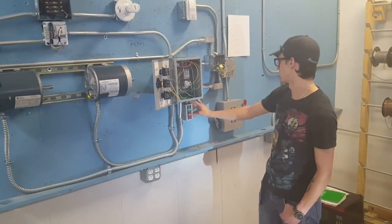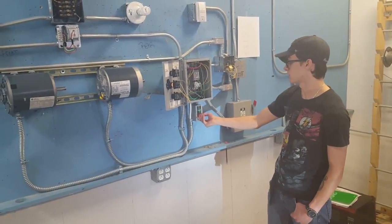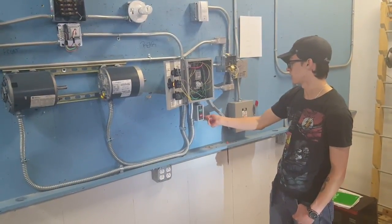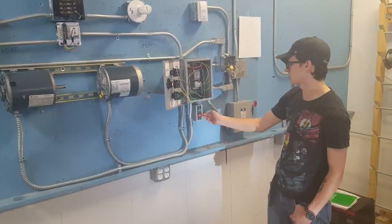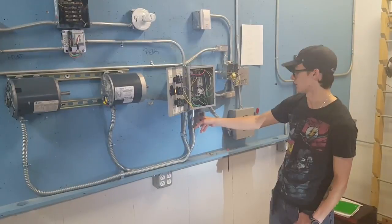We wire this so the power is coming off one of the three phases going directly into the stop button, which is a normally closed contact. That stop button is coming out into the input of the start button, which is a normally open contact.